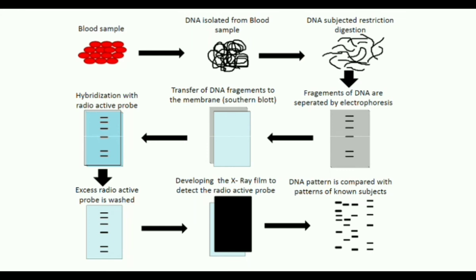DNA fingerprinting can be used for a paternity test. It is also used in crime investigation to identify suspects. From the scene, biological samples such as blood, hair, skin fragments, and semen are collected. The DNA fingerprints from suspects are then compared to the samples. DNA fingerprinting applications are thus useful for criminal investigations.